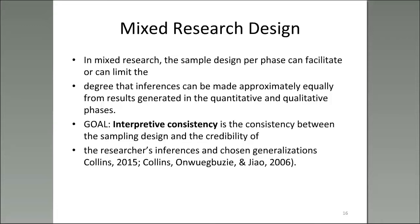In mixed research, the sampling design per phase can facilitate or limit the inferences you make. You determine the degree that the sampling design supports the credibility of inferences from the quantitative and qualitative phases. For example, is it credible to survey 100 individuals through questionnaire data and then take a subset of 10 for an in-depth qualitative analysis? This 100 versus 10 can be considered interpretive consistency if you have indicated what type of generalization you wish to make — what the 10 said can be generalized internally to the broader sample.